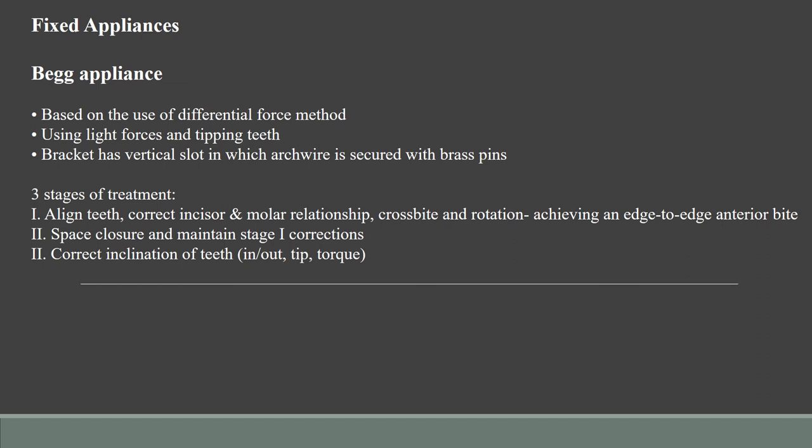Some of the advantages of the Begg appliance include the use of light forces, which are usually within acceptable physiological norms. This did not cause any deleterious effects on the adjacent periodontal structures and bone. There was also application of continuous force on these teeth, and the friction between the brackets and the arch wire was also reduced.